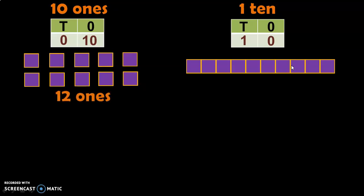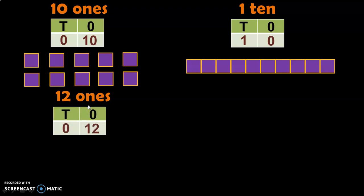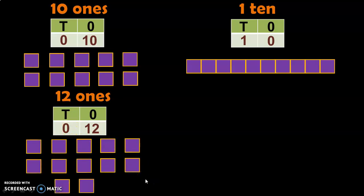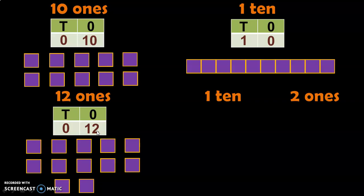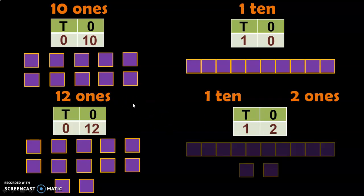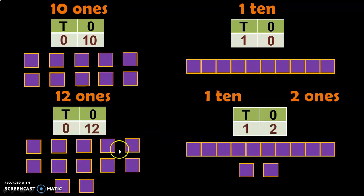Let us take another example: 12 Ones. In the place value chart, you will have 12 in the Ones place and 0 in the Tens place. Now we need to regroup this. 12 Ones can be written as 1 Ten and 2 Ones. When you write it in the place value chart, there will be 2 in the Ones place and 1 in the Tens place. We have regrouped to get 2 in the Ones place and 1 in the Tens place.